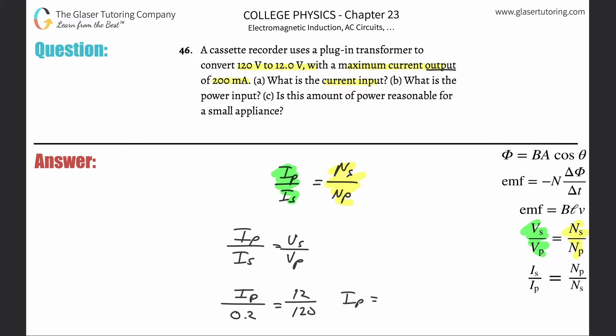All you got to do is now a little bit of algebra here. So take the 0.2, multiply it by the 12 and then divide it by the 120 and you get, okay, 0.02. All right. And that is done in terms of amps. Now that's all fine and dandy, but we got a letter B.